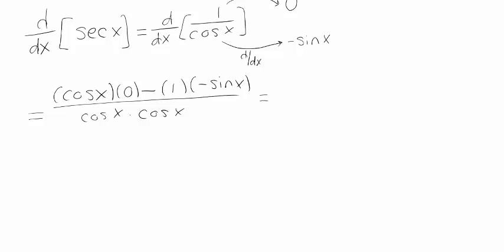Cosine of x times 0 is just 0. Minus a minus is a positive. So my top looks like - I'm just going to write this as 1 times sine x divided by cosine x times cosine x. And I've been writing it this way because I know I'm going to split it up. This is going to be 1 over cosine x times sine x over cosine x.